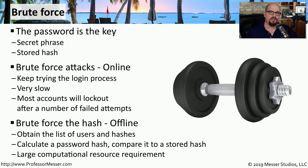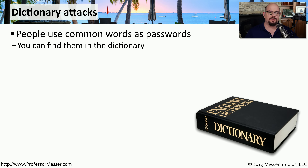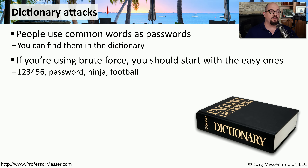Because the creation of a hash is a cryptographic process, there are significant computational resources required. The more hashing you do, the more CPU you're going to need. Instead of going through every possible combination of numbers and letters in an attempt to find what that hash happens to match, instead what we should do is use some of the most popular terms that people use for their passwords. These are called dictionary attacks because we're using words and phrases that you would find in the dictionary. If you're going to perform a brute force attack, these may be the first ones that you happen to try.